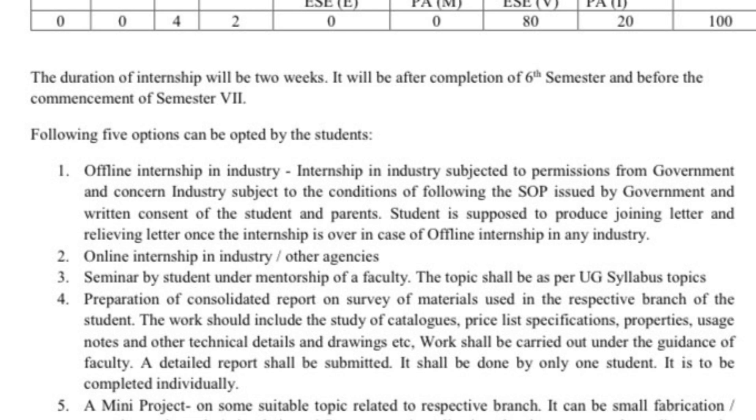When you have confirmed with the industry and they are ready to give you training, you need to produce a consent letter along with an application to the department. The application should mention your name, enrollment number, and all details — including the industry where you want to take training, the contact person, and their designation. Based on this application and consent letter, the department will issue you a NOC for the training.